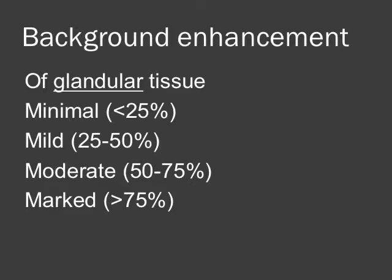You need to make some assessment of the degree of background enhancement — this is the background enhancement of the normal glandular tissue in the breast, quantified into four approximate ratings. There is significant intra- and inter-radiologist variation when assessing this, and they may be changing these in the new BI-RADS. But for the moment it is separated into: minimal, less than 25% of the glandular tissue enhancing; mild, 25 to 50%; moderate, 50 to 75%; and marked, more than 75% of the glandular tissue enhancing. So not the cancer, not the fatty tissue, but the glandular tissue.